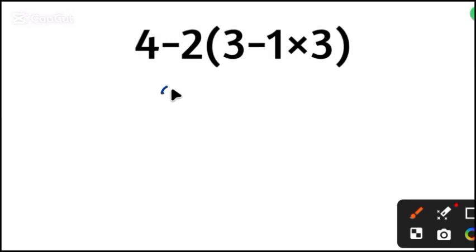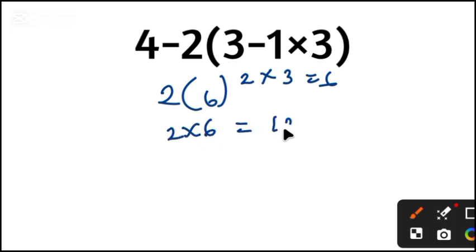4 minus 2 will give us 2. 3 minus 1 equal to 2. 2 times 3 equal to 6. So this is 6 here. Now 2 times 6 will give us 12. Incorrect.